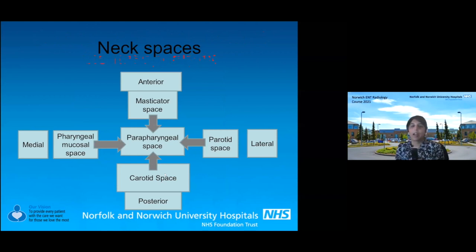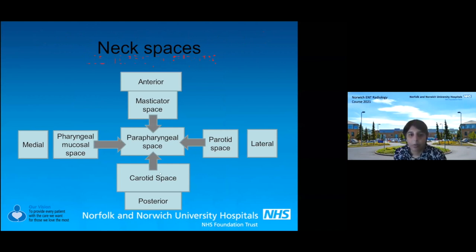Moving on to neck spaces. There's so much to cover, so I'm trying to give you things you can hang your hat on when looking at a scan logically. I've done it in diagram form. The parapharyngeal space and parapharyngeal fat is the center of our little world of neck spaces. We've got the masticator space anterior to the parapharyngeal fat, the carotid space posterior, the parotid space lateral, and the pharyngeal mucosal space with the oropharynx medial to it.